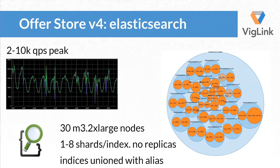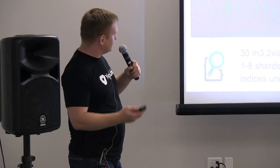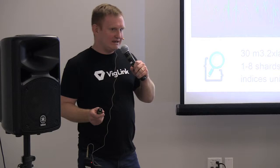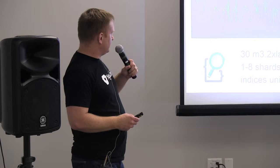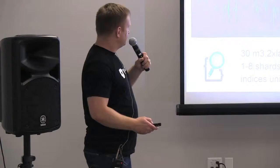So about a year ago we went to Elasticsearch. It has handled as high as 10,000 requests per second. We run typically much closer to 2,000 these days — we've done a lot more tuning and caching. We have about 30 nodes in the cluster. Depending on the index size, we're anywhere between one to eight shards with no replicas. We union these effectively with an alias so that the link insertion pipeline gets to view all of these different feeds as a single index.